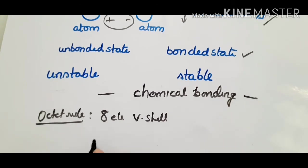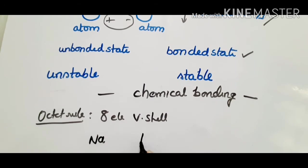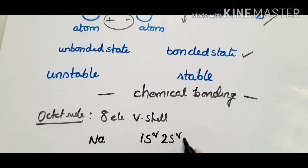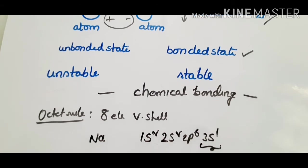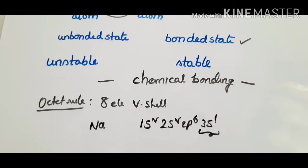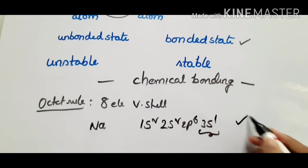Suppose sodium. The electronic configuration of sodium is 1s2, 2s2, 2p6, 3s1. This is the outermost electronic shell, with one electron. Valency electrons depend on this outermost shell.